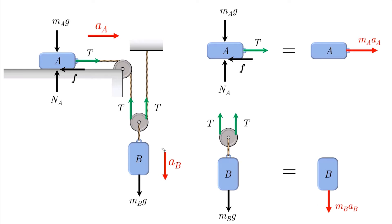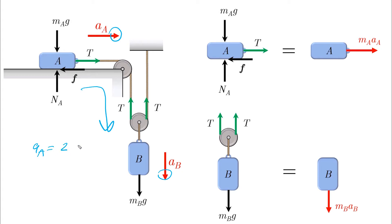To avoid confusing negative signs between the acceleration of A and the acceleration of B, make sure that the positive motion of A leads to a positive motion in B. This way we have a direct relationship: AA equals 2AB.